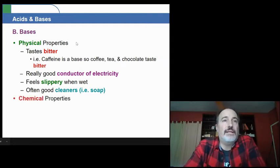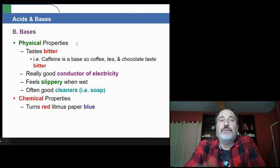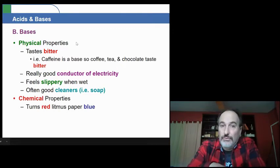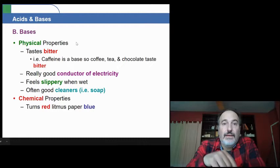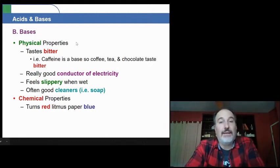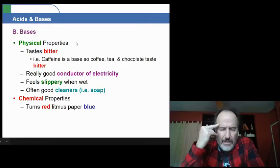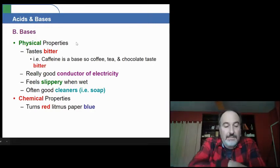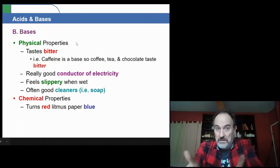Now, some chemical properties. Chemical properties. First of all, it turns red litmus paper blue. So, remember, acids are red. Bases are blue. I love chemistry, but I hate you. No, always get that one wrong. Anyways, but acids are red. Bases are blue.